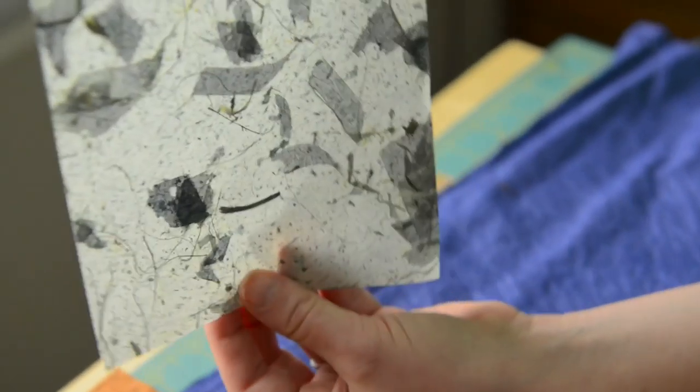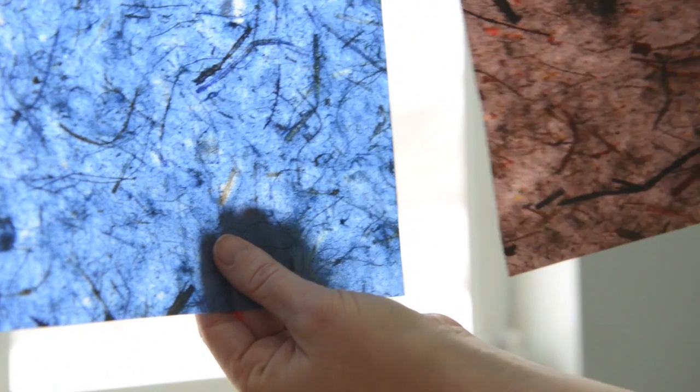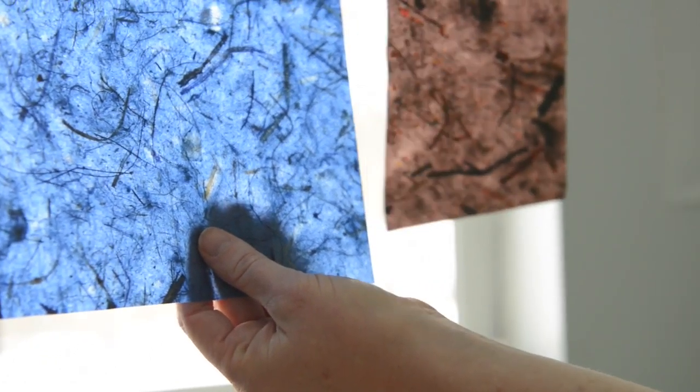This is paper from Thailand too and you can kind of see that it has leaves in it. This one actually has banana bark in it. This one does too. These have banana bark in them. So they have lots of different inclusions in them and they're pretty thin.